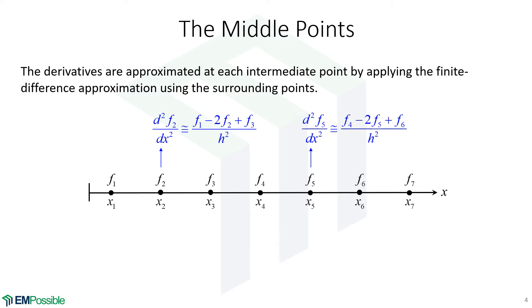As an example, the second order derivative at the second point would be F1 minus 2 times F2 plus F3 divided by H squared. Remember, H is the distance between adjacent points. So the second order derivative here is being approximated using that point plus its surrounding points.